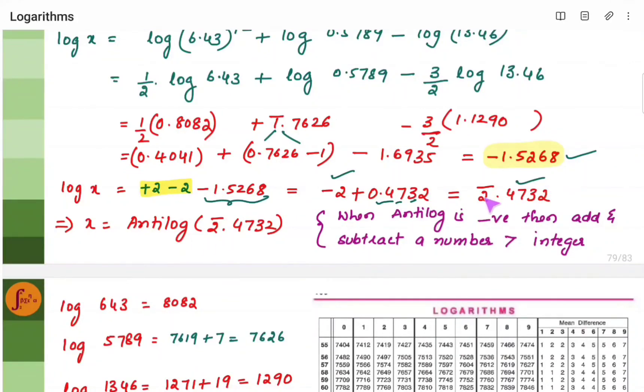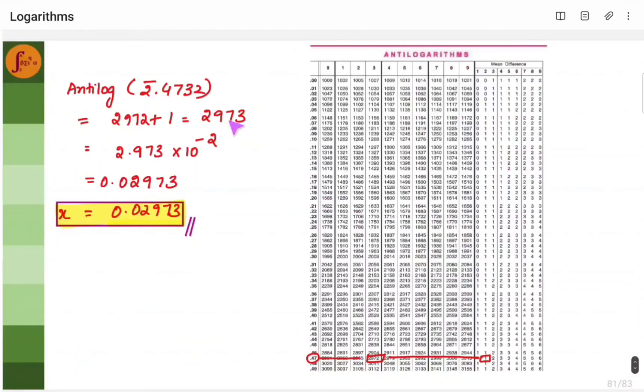Now you can find the antilog of this. So we will find antilog of 4732. 4732 antilog is 2973. 2973, you put decimal point after first digit. Into 10 to the power minus 2 because you have minus 2 as a characteristic. So that's all. Then left shift by 2 decimal points. Left shift 1. This is 1, 2nd and here the decimal point. So this is the x value.